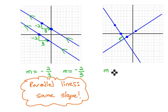Notice the slope of the first line on the left goes down 3 over 2, is negative 3 halves. The slope of the second line on the right is up 2 over 3. It has a slope of 2 thirds.